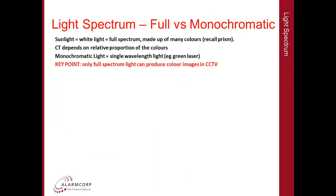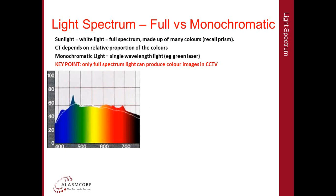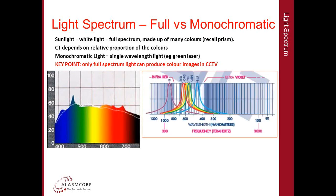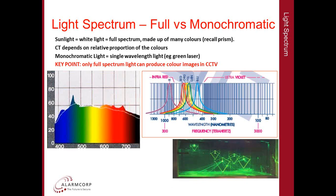Now let's look at full spectrum light versus monochromatic light. Sunlight is white light — a full spectrum light made up of many colors, as we saw with the prism example. The color temperature of light depends on the relative proportion of all the colors. Monochromatic light is a single wavelength light, for example a blue laser or a red or blue LED. The key point is that only full spectrum light can produce color accurate images within CCTV, because we see an object's colors by the colors that it absorbs and reflects. If you illuminate an object with a monochromatic light such as a green laser or red LED, the object can only ever appear to be the color of the monochromatic light.